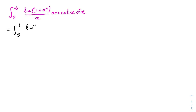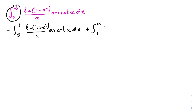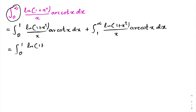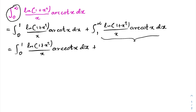...to 1 of ln(1 + x²) over x times arccotangent of x dx, plus the integral from 1 to infinity of the same integrand. So we split the original integral over [0, ∞) into two parts: from 0 to 1 and from 1 to infinity. Now for the second integral, I am going to take a substitution: x = 1/u.